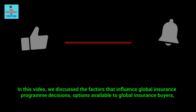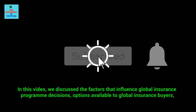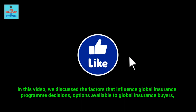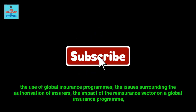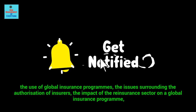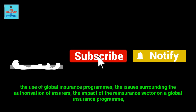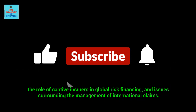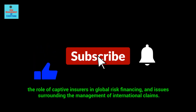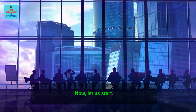In this video, we discussed the factors that influence global insurance program decisions, options available to global insurance buyers, the use of global insurance programs, the issues surrounding the authorization of insurers, the impact of the reinsurance sector on a global insurance program, the role of captive insurers in global risk financing, and issues surrounding the management of international claims. Now, let us start.